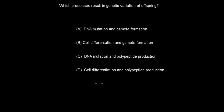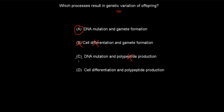Welcome back. The correct answer is A — DNA mutation and gamete formation are the two processes that cause genetic variation. Cell differentiation does not cause genetic variation, so B is false. Polypeptide production does not cause genetic variation, so C is false. D is also false. So A is correct.